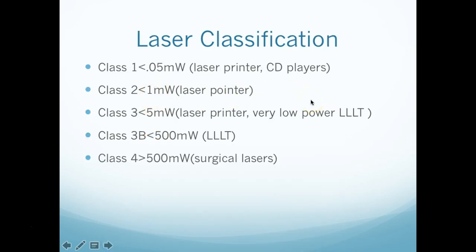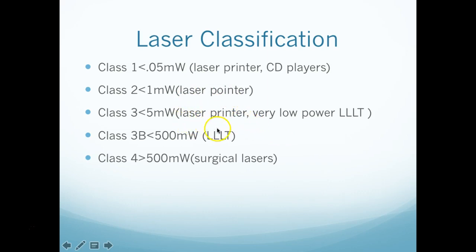Here's our classification system for lasers. Class 1 is less than 0.05 milliwatts — that would be like a laser printer or CD players. Class 2 is those pointers with the red dot that we use in class during PowerPoints. Class 3 — and 3b specifically — is what we use in physical therapy: the very low power lasers, the ones we use the goggles with. Class 4 is the surgical lasers used in actual surgery, at a higher milliwattage.